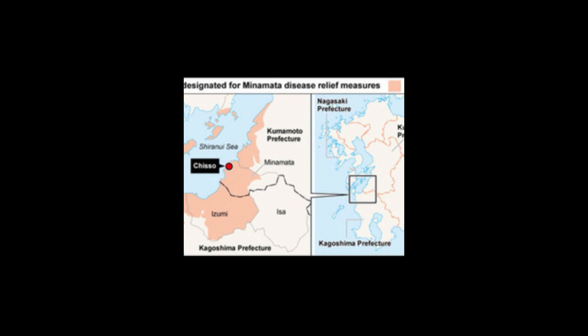In 1956, in the city of Minamata, Japan, an unidentified sickness had plagued the inhabitants of the town. The case had baffled local health officers and the situation was reported as an epidemic of an unknown disease of the central nervous system.